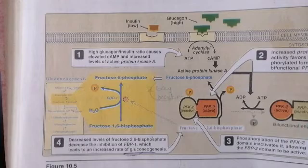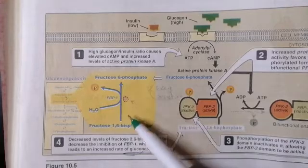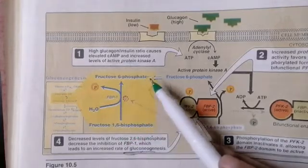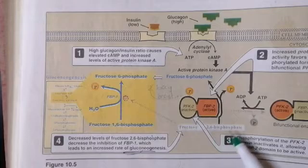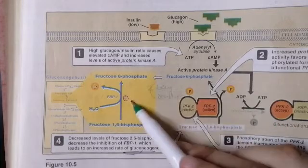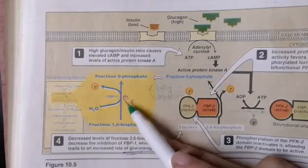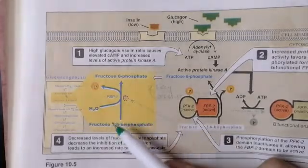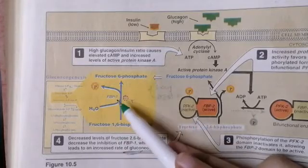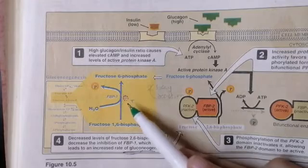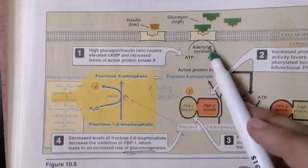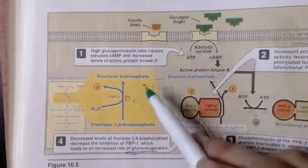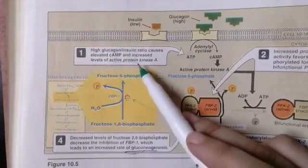Because fructose 2,6-bisphosphatase becomes inactivated, there is a decrease in the concentration of fructose 2,6-bisphosphate. This means there is decreased inhibition of the conversion of fructose 1,6-bisphosphate to fructose 6-phosphate, which is the key gluconeogenic step. Therefore, because of the decreased amount of fructose 2,6-bisphosphate — due to inactivation by protein kinase A via adenylyl cyclase from elevated glucagon — gluconeogenesis is increased.